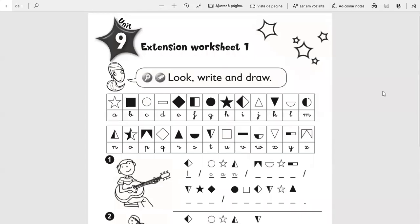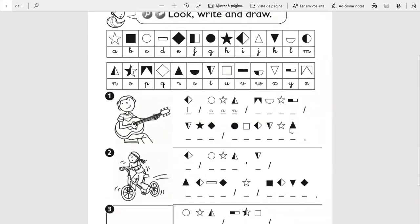Extension worksheet one: look, write and draw. What we have here is symbols with the letters of the alphabet. What you have to do is very simple—you've done it already. You have to put the letter corresponding to the symbol.